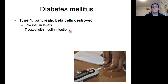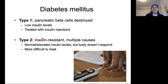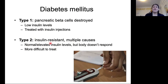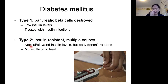Type 1 is generally treated with insulin injections or an insulin pump — if you're missing insulin, you get insulin put into your body on a regular basis to take the place of the beta cells. Type 2 diabetes, also referred to as insulin resistant diabetes, is a result of a variety of causes. In type 2, you have normal or even elevated insulin levels, but your body is not able to respond to the insulin — it somehow can't sense it. There's something wrong with the signal transduction, and there are a lot of pathways we don't fully understand, which makes it more difficult to treat.